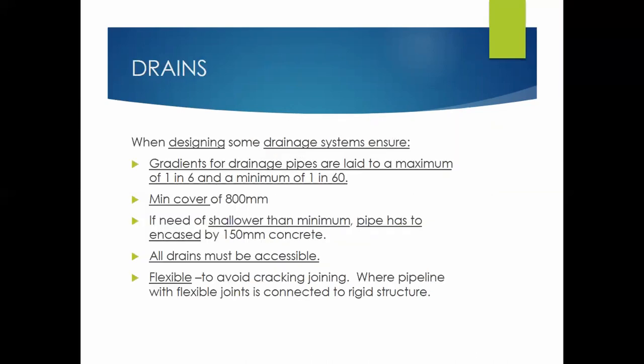When designing drainage systems, you must ensure that the gradient for drainage pipes is laid to a maximum of one in six and a minimum of one in 60. The one refers to the vertical distance; the six or sixty refers to the horizontal distance. In South Africa, one meter up equals six meters to the side. The minimum cover required is 800 millimeters — if you need a shallower installation, the pipe must be encased. All drains must be accessible and should be flexible to avoid cracking.